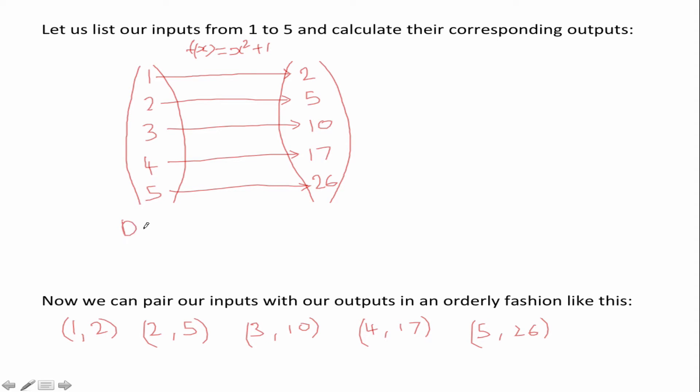The first element in these ordered pairs, that will be this set here, is in fact called the domain. And the output, the second set here on the right, is called the range. The first element is the domain, the second element is the range and we can use these ordered pairs to in fact plot graphs on a coordinate system.